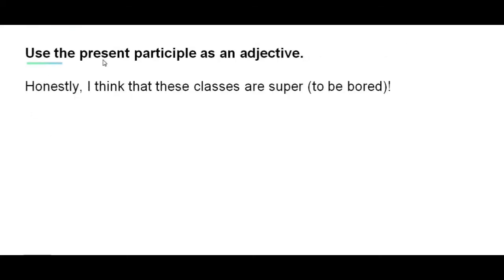Note that we also use the present participle as an adjective. Now read the following sentence and provide the present participle form of the verb in the bracket. Honestly, I think that these classes are super to be bored. Honestly, I think that these classes are super boring.